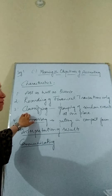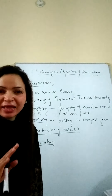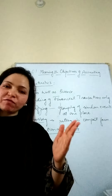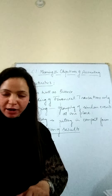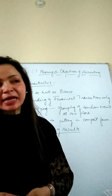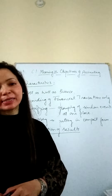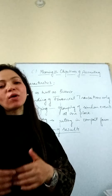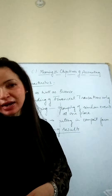The third feature is classification. Just as in school you divide your work into separate registers — business studies, accountancy, economics, maths — to make it easy to check, revise, and locate, in accounting too, transactions are grouped and recorded in particular groups. For example, all purchase events go in the purchase book and all sales events go in the sales book. This grouping of similar transactions at one place is called classification.